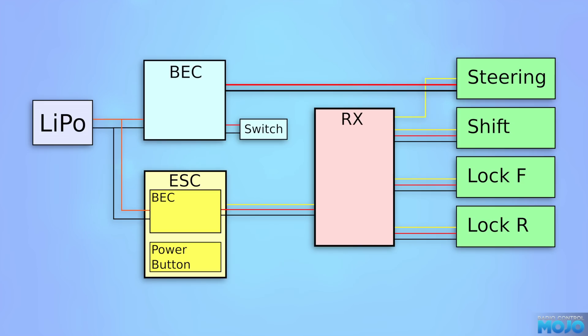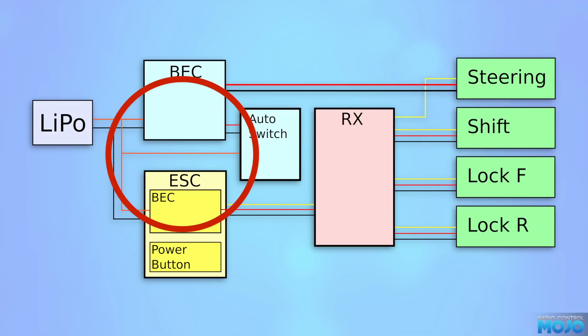If we change the switch for an auto switch, good name, I know, I spent ages thinking about it. Give it a connection to the battery for some power, and we'll need to connect the output from the ESC's BEC, that will give us a fully automatic system. When we plug in the battery and press the power button on the ESC, it will turn on its BEC, which the auto switch sees and turns on the external BEC for us.